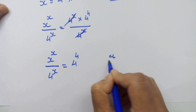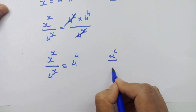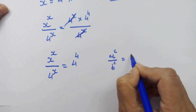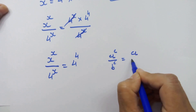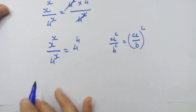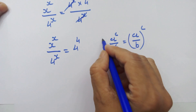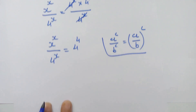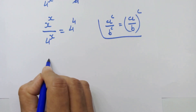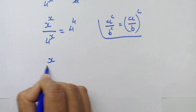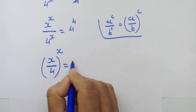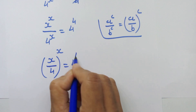If we have a raised to c upon b raised to c, we can write it as a upon b whole raised to c. By using this rule on the left side, we can write x upon 4 whole raised to x is equal to 4 raised to 4.